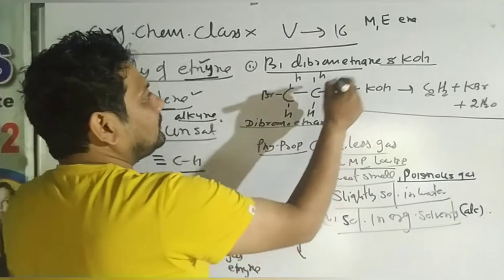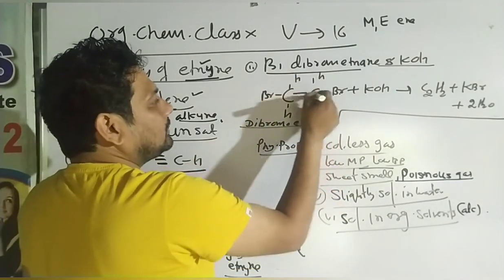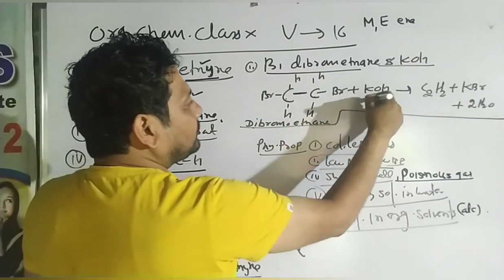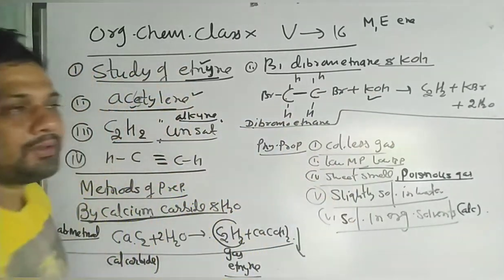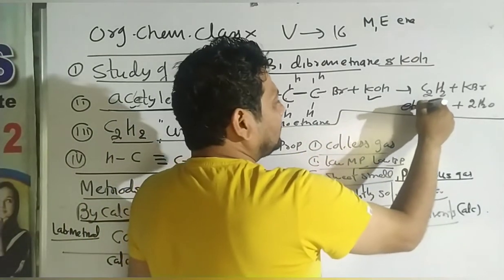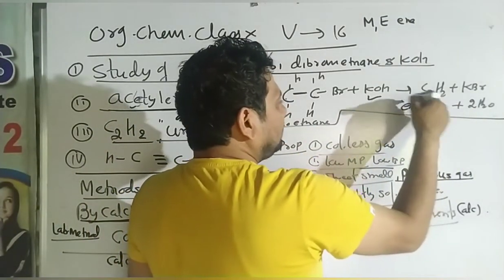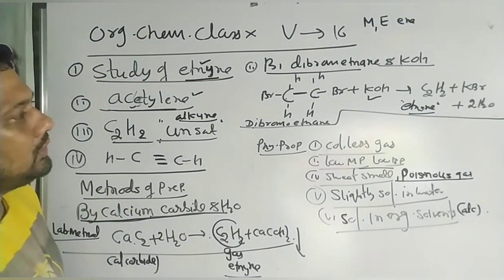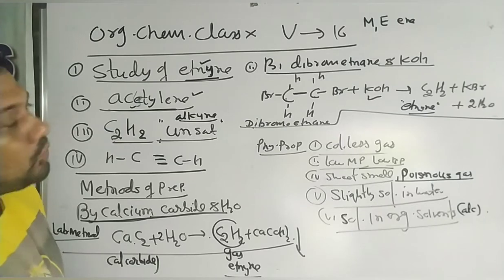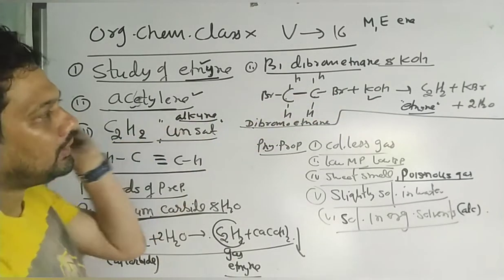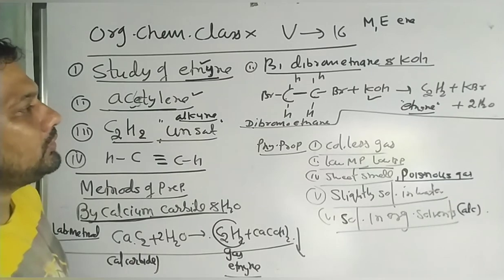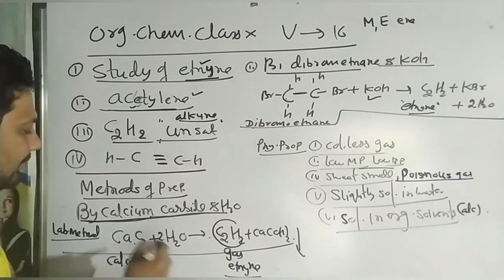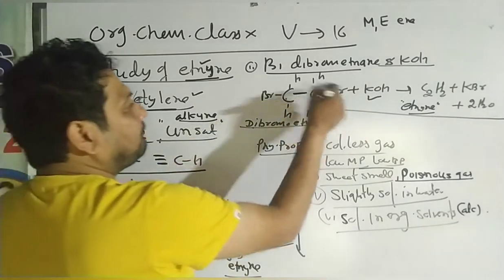Method two: dibromoethane with KOH. Dibromoethane has two carbons with a single bond and bromine atoms. When dibromoethane is mixed with KOH, ethyne gas is formed along with KBr and 2H2O. So these are the two methods of preparation of ethyne: calcium carbide plus water, and dibromoethane plus KOH.